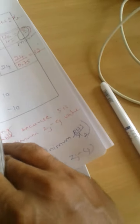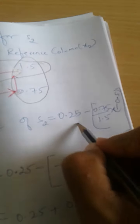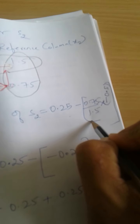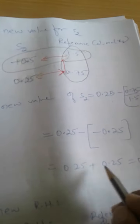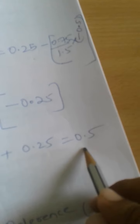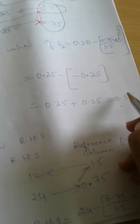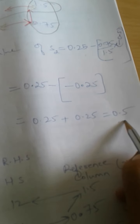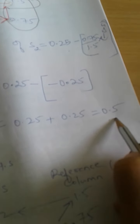Moving to the S2 calculation: 0.25 minus 0.75 divided by 1.5 into minus 0.5. After doing this calculation we get the answer as 0.5. This will be the new value for S2, Rho 2 S2, in the next table.